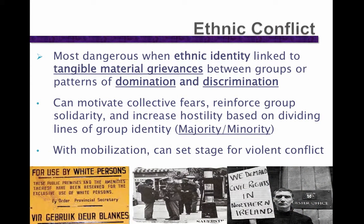Aside from leaders and past histories of conflict, there is evidence that ethnic identity only really becomes dangerous when divisions along ethnic lines become associated with tangible grievances among groups living within one state. For instance, if ethnic identity becomes tied to patterns of long-standing domination or exploitation of one group over another — where access to political, social, or economic goods becomes largely determined by one's ethnic group — this can become particularly dangerous when one ethnic group gains control of the state and uses state power to improve their own position at the expense of another.